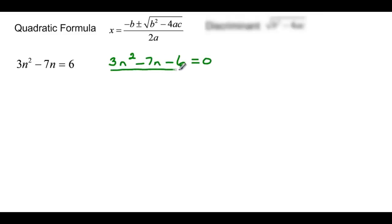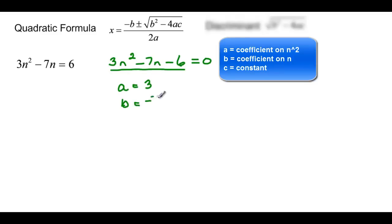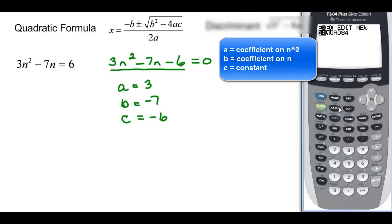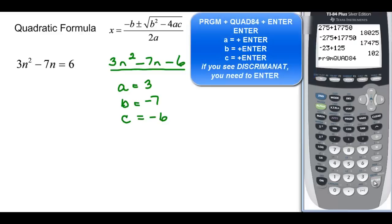And this is what I will put in my calculator for the quadratic formula. And a here is the coefficient on n squared, so 3. B is the coefficient on n, so negative 7. And c is the constant, or negative 6. Again, using my calculator, I just choose program. And then I press enter, because I want quantity 4. It says program quantity 4, yep, that's what I want. So another enter.